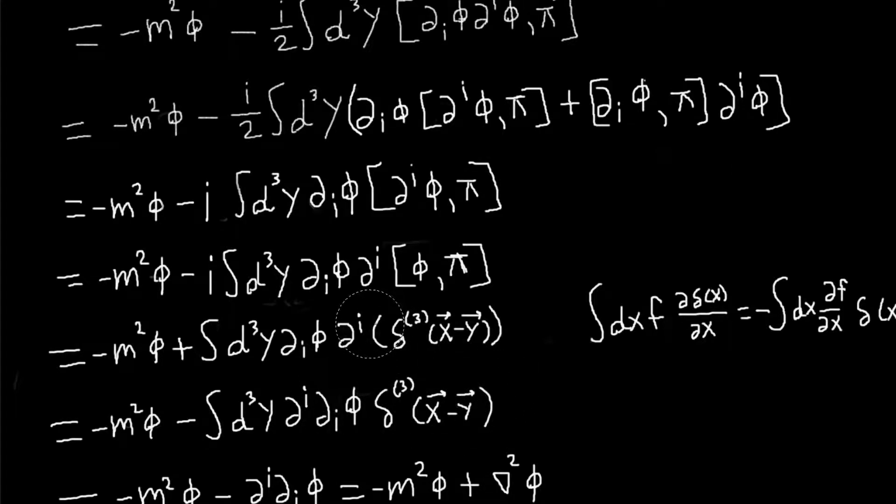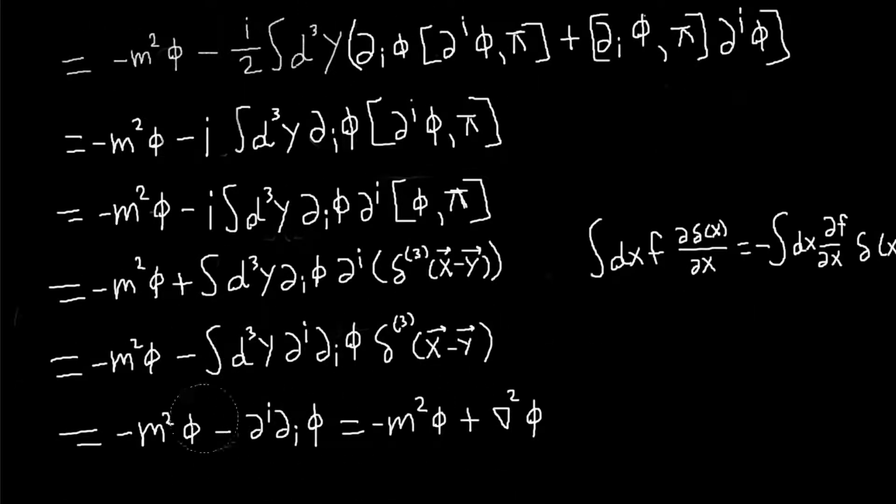And so I end up carrying this di to, so my f here is just di phi, so I end up with a di di phi, and this minus sign, and a delta function. And now I can just do the integral because of this delta function here, and so I get a minus m squared phi minus di di phi, which can be written as minus m squared phi plus del squared phi.